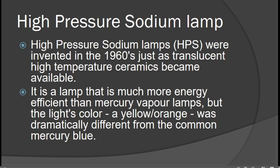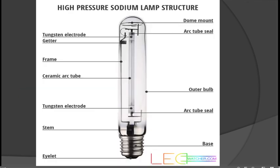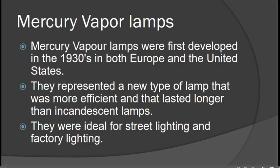We also have the High Pressure Sodium lamp, or HPS. This type of lamp is much more energy efficient compared to mercury vapor lamps, though its light color is dramatically different from the common blue of mercury lamps. Mercury vapor lamps were first developed in the 1930s in both Europe and the USA. They represented a new type of lamp more efficient and longer-lasting than incandescent lamps, ideal for street lighting and factory lighting.